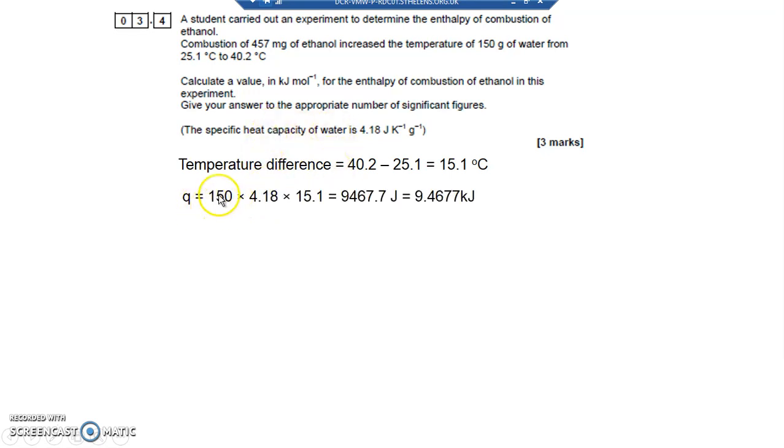Q equals M, which is the mass of water. Remember, it's the mass of water, not the mass of the ethanol being burnt. It's 150 grams multiplied by the specific heat capacity multiplied by the temperature.